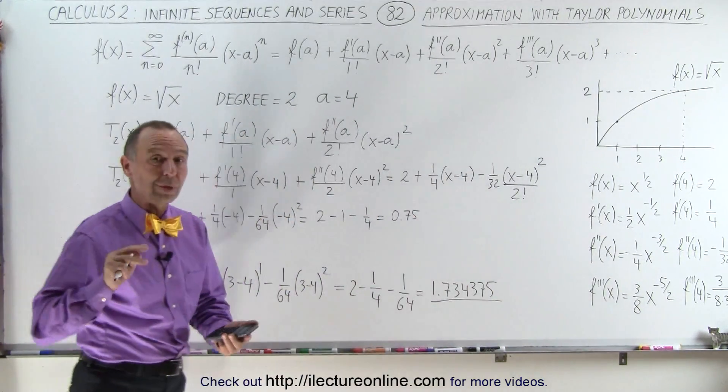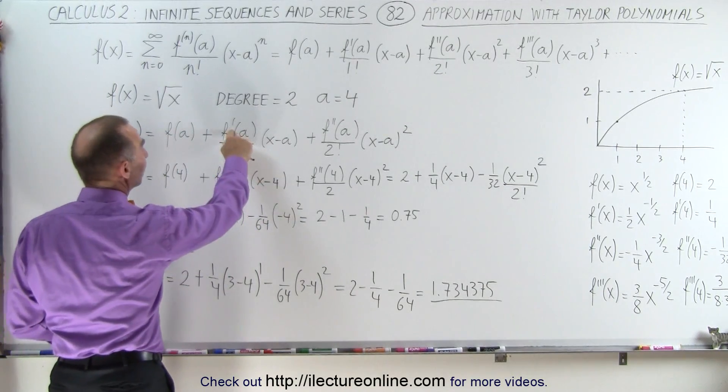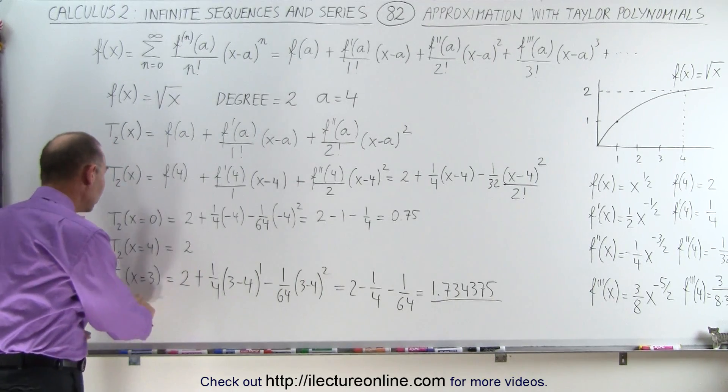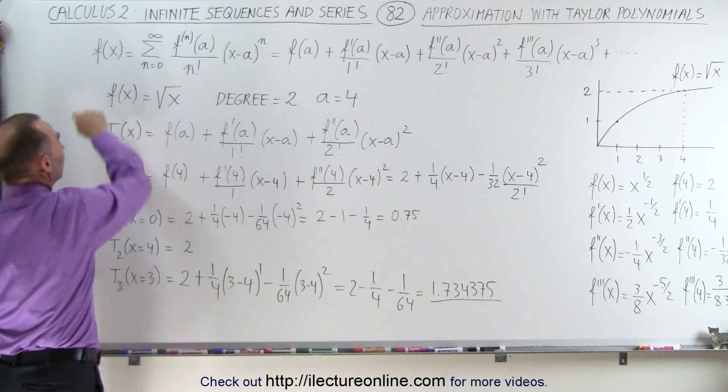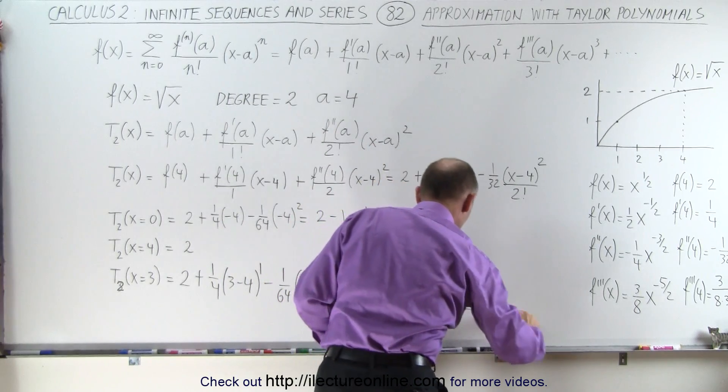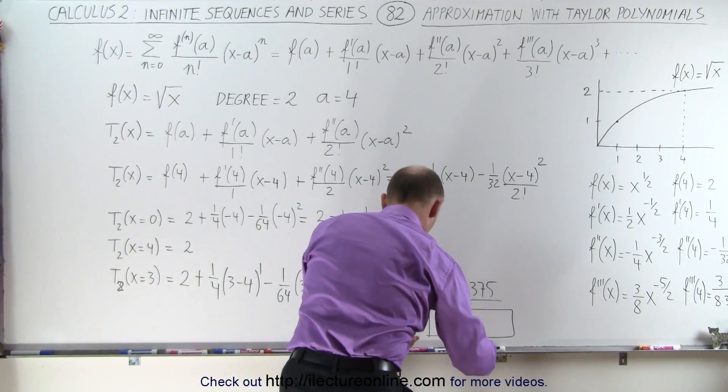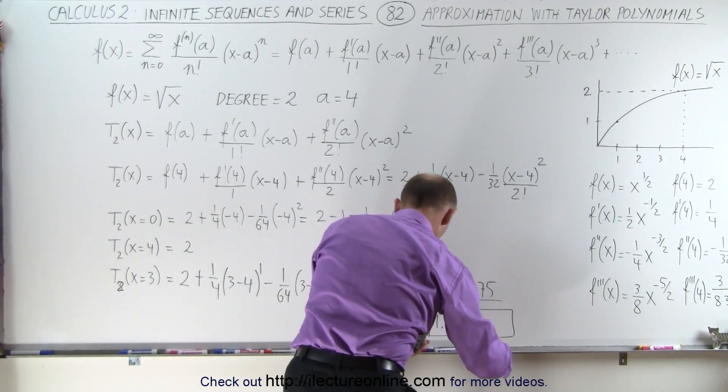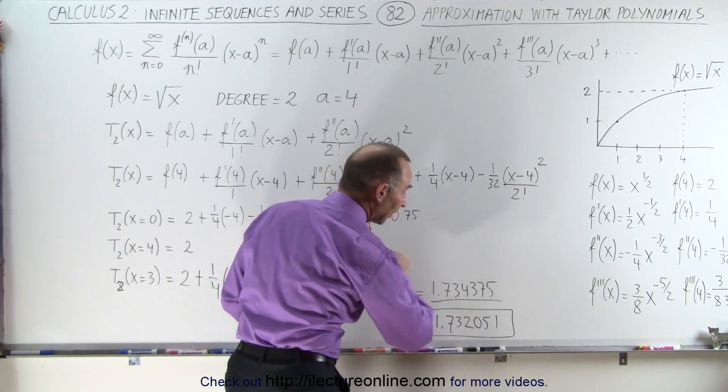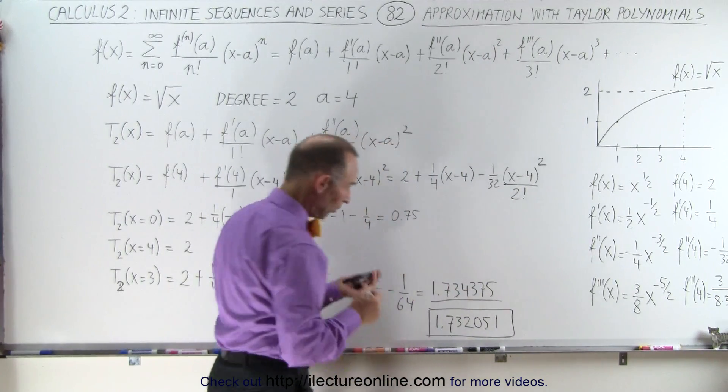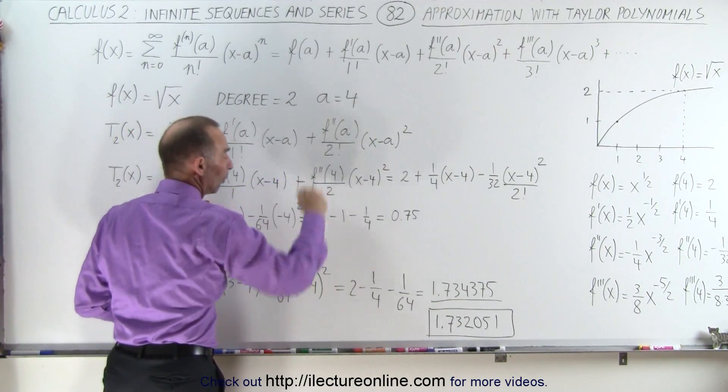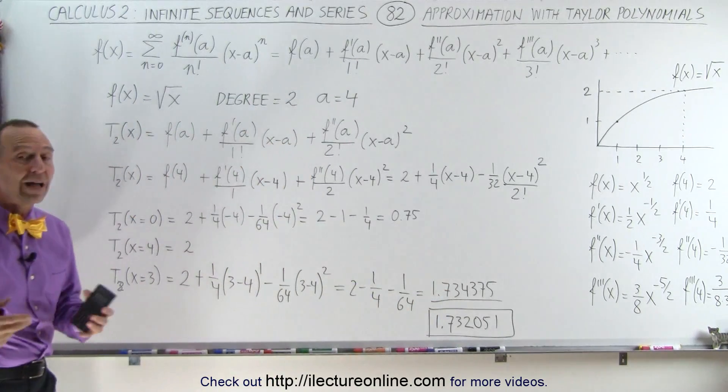After only using three terms, the first term and then the f prime and f double prime term. What should the actual value be? Well, let's take the square root of 3 and see what we get. After all, that's what the function is. So, take 3 square root, and the actual value that I should have gotten is equal to 1.732051. And you can see that for the first two decimal places, we're already right on the nose, and not that far off in the third decimal place. So, you can see that even when the number is one different from the value that we picked, we converge rather quickly to a correct value of that function.